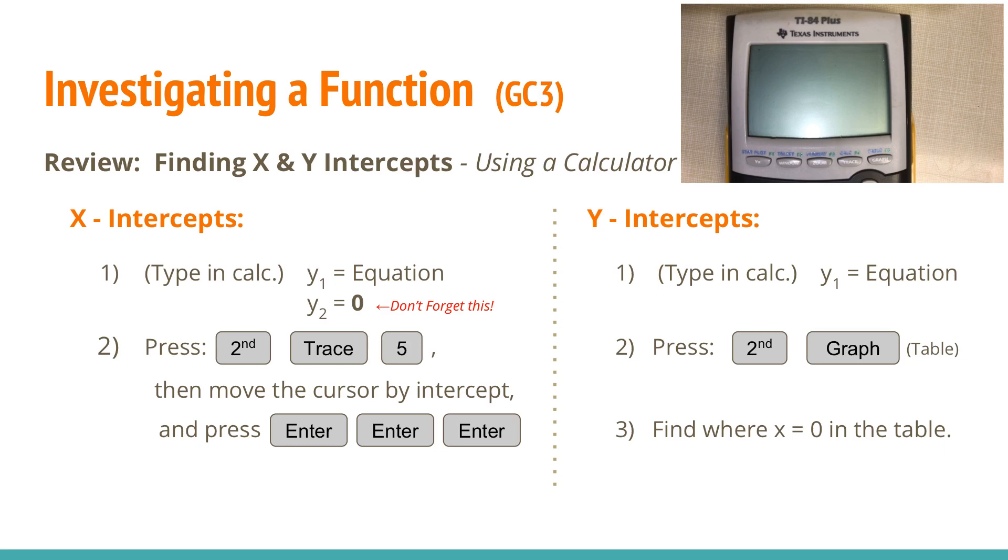In our course you've already learned how to find x-intercepts and y-intercepts, but just to go through it again, the first thing you have to do is make sure you type your equation in the y1 equals of your calculator and then going to y2, pressing second trace 5, and then moving your cursor over by the intercepts and pressing enter, enter, enter.